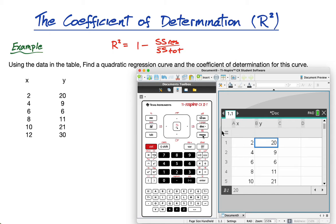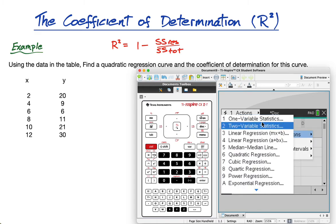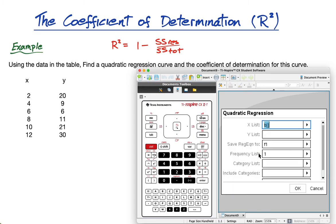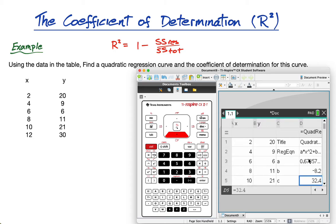Now, what I can do is, I can go press menu, statistics, stat calculations, quadratic regression, the x list is x, the y list is y, keep all this the same, press ok, and I get this. So, I get a, b, and c, that's my ax² plus bx plus c, and then I get the r squared value here, which is 0.957, etc.